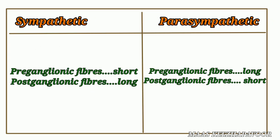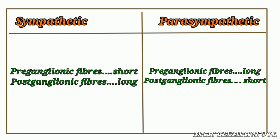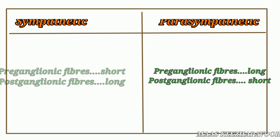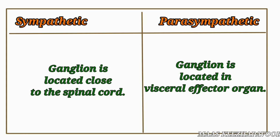The preganglionic sympathetic fibers are short but the postganglionic sympathetic fibers are long. At the same time, the preganglionic parasympathetic fibers are long but the postganglionic parasympathetic fibers are short. The sympathetic ganglia are located close to the spinal cord, whereas the parasympathetic ganglia are located in visceral effector organs.